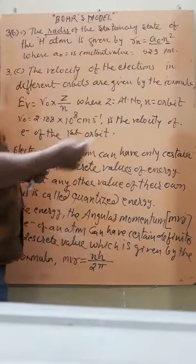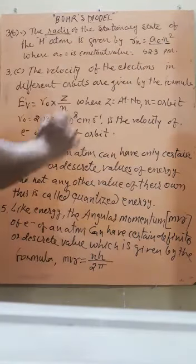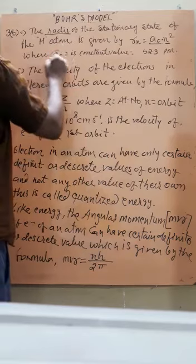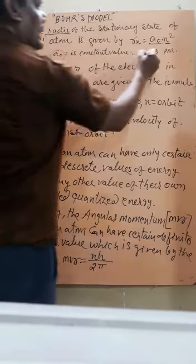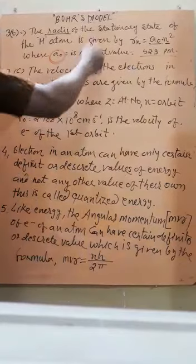Here n is the number of orbit: 1, 2, 3, 4, etc. And a0 is the constant value, and its value is 52.9 picometer.